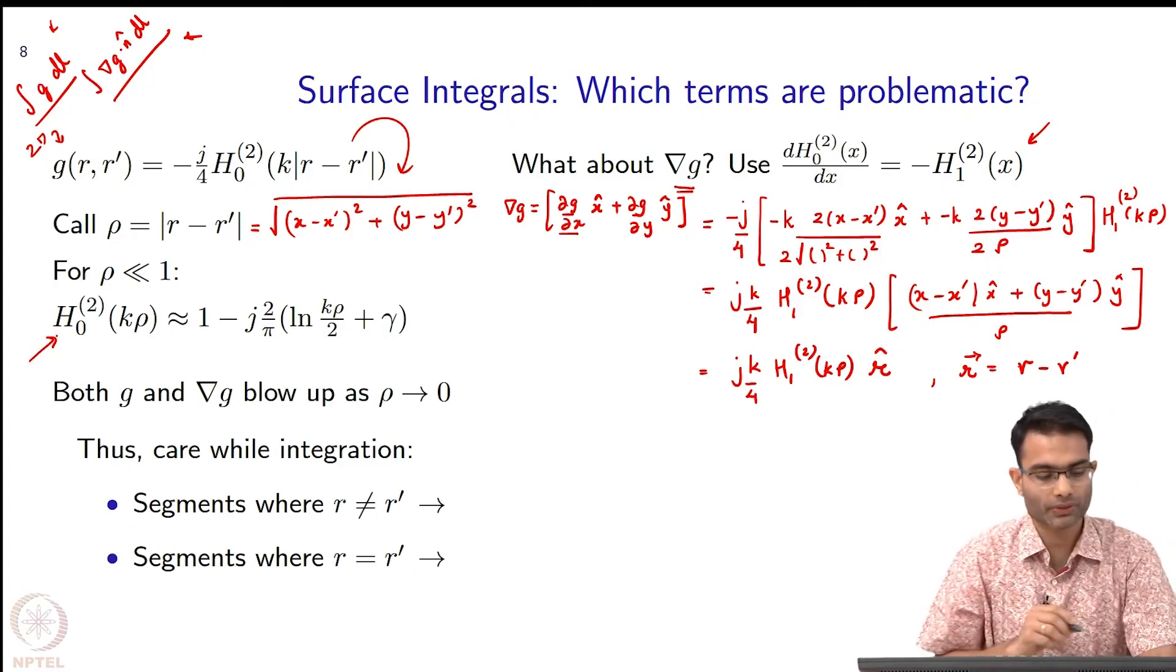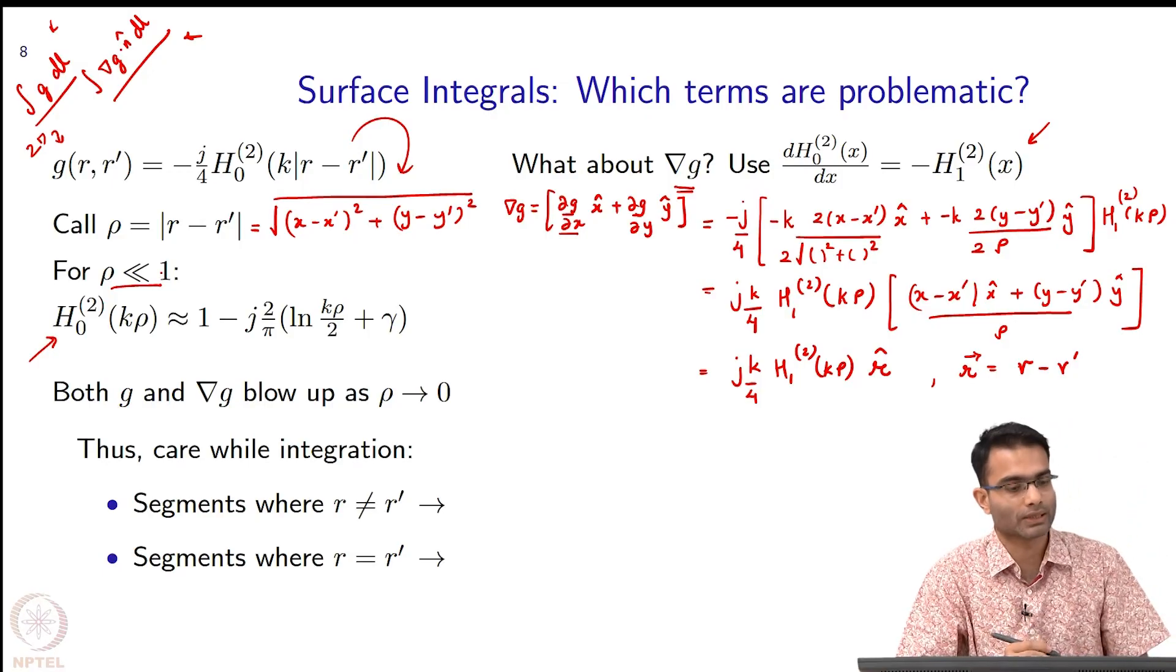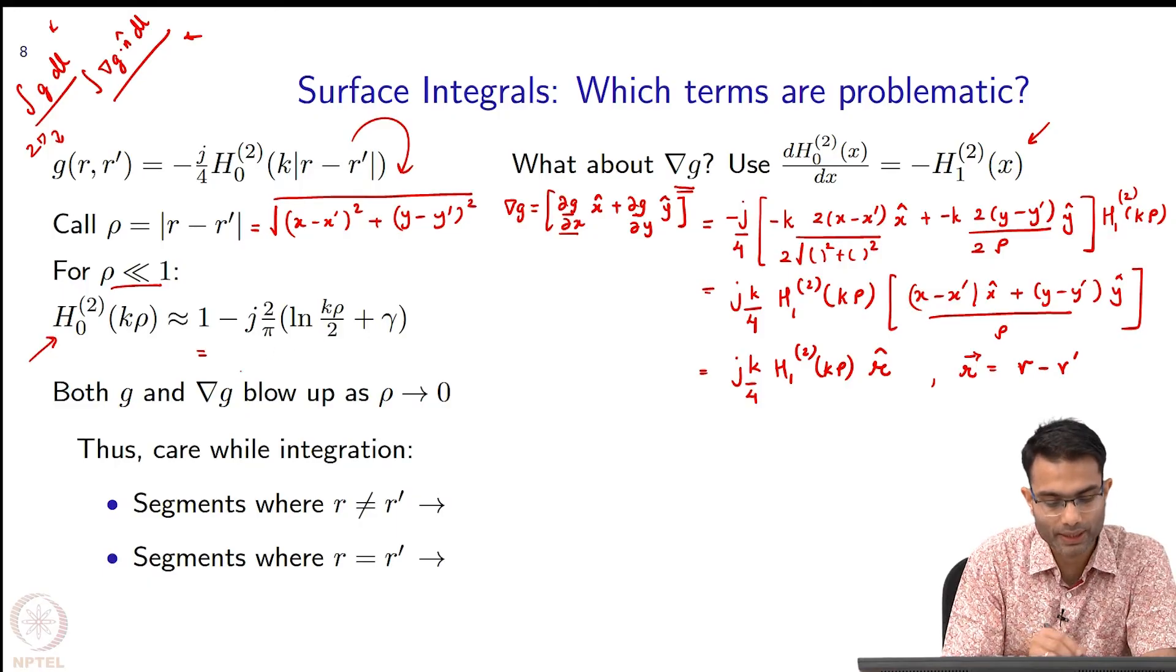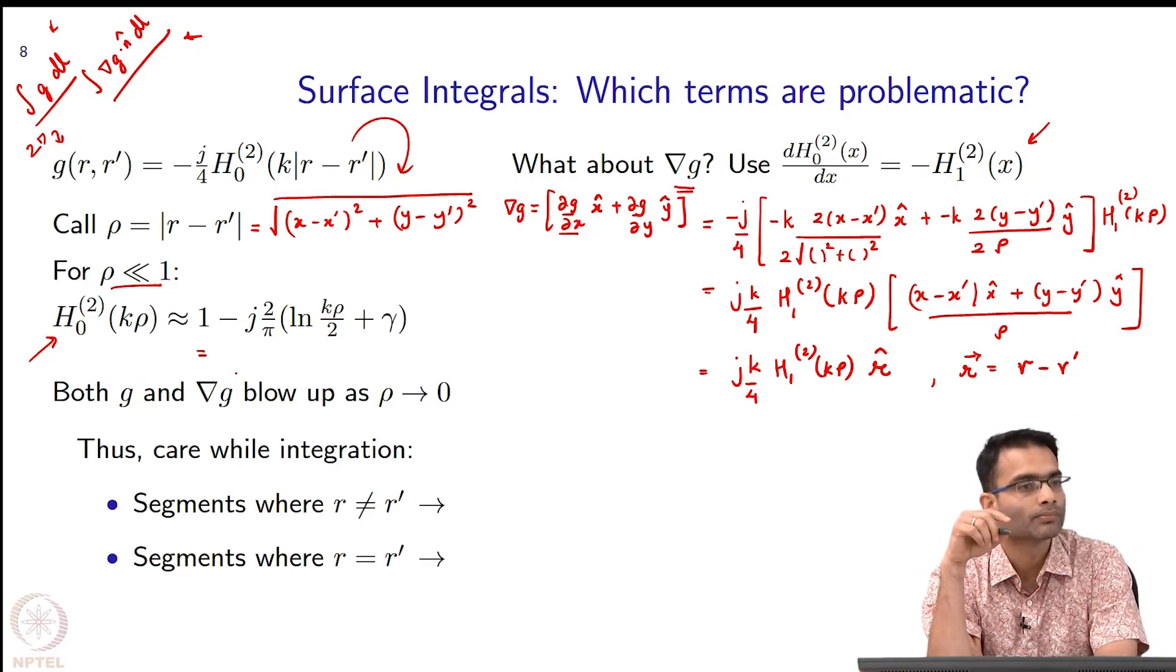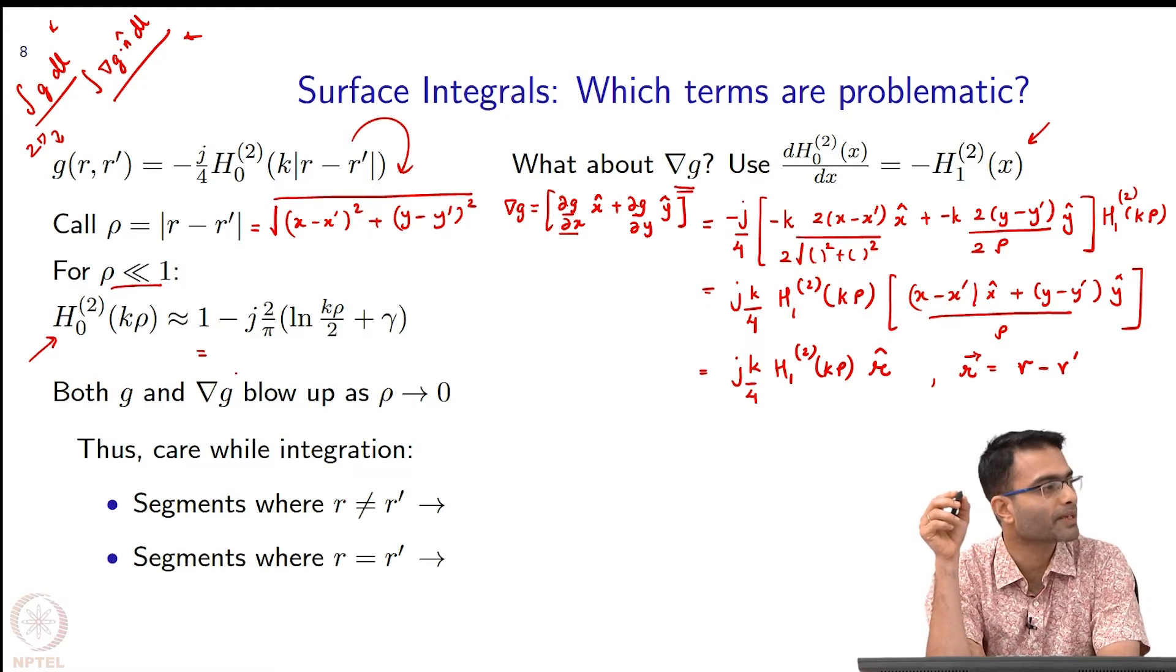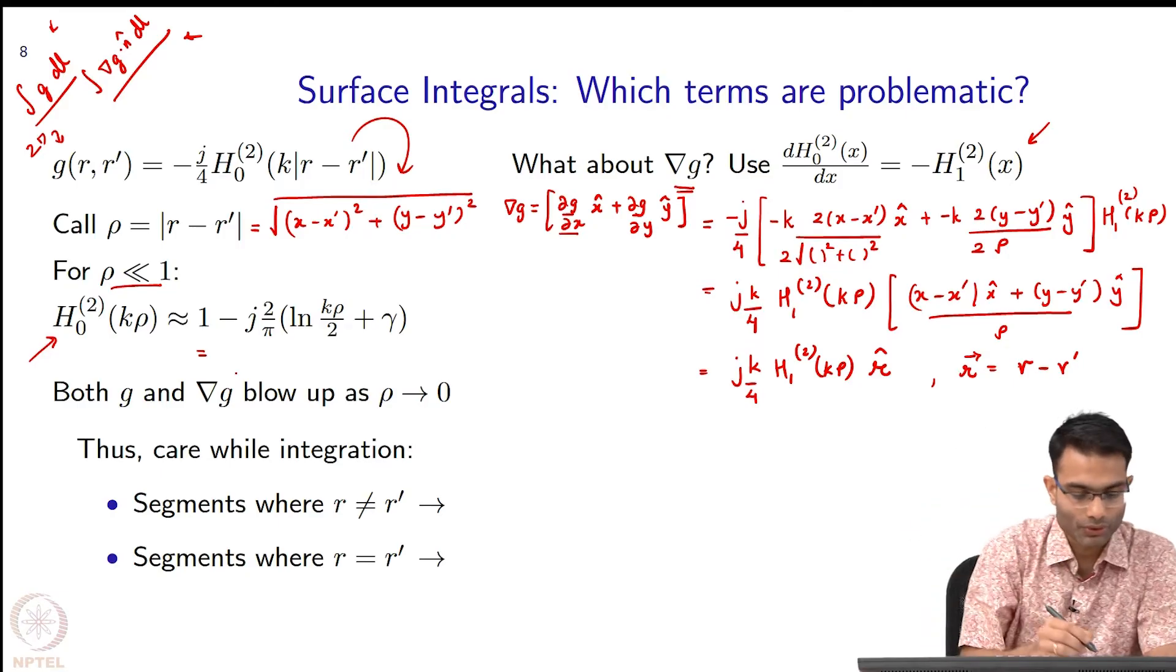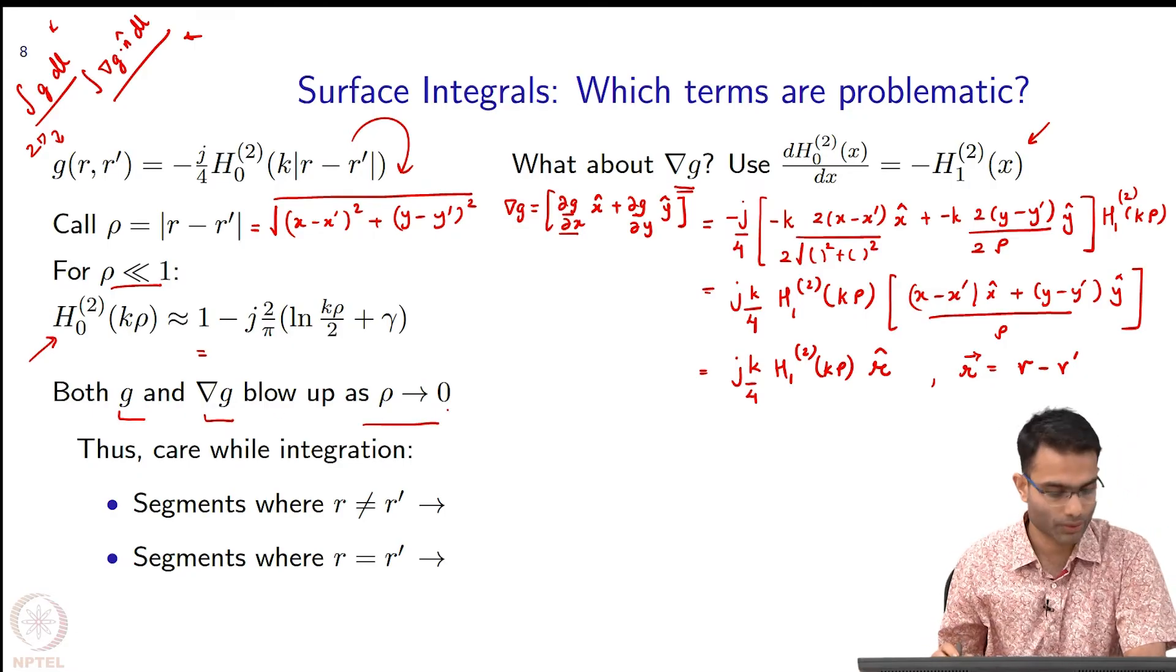For example, how the Hankel function looks like for very small rho, you have already seen. It has a real part which is well behaved and has a imaginary part that looks like log of rho. What is the value of log of rho as rho tends to 0? Minus infinity. This is going to be the problematic integral. Do you think H_1^(2) will be any better behaved? No, H_1^(2) also has a singularity sitting at the origin.